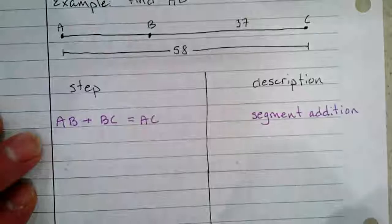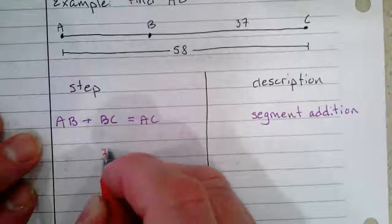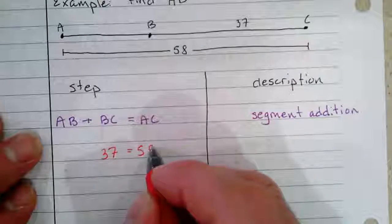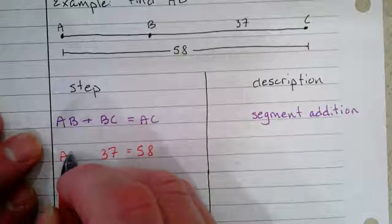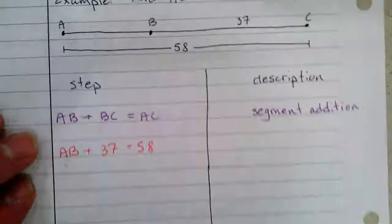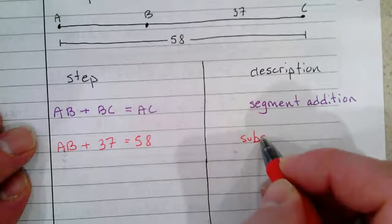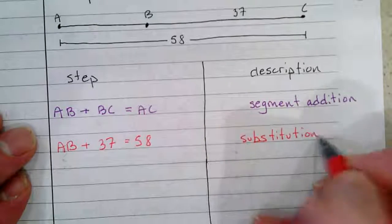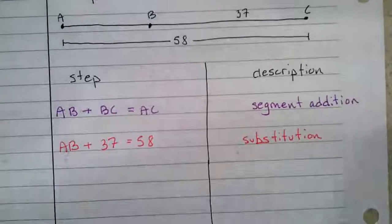Next, we're going to replace BC with 37, AC with 58, and AB—well, we don't know that yet. And this step is just substitution.